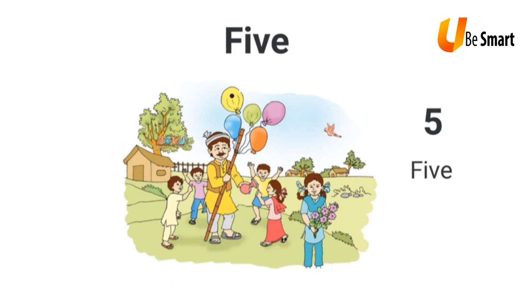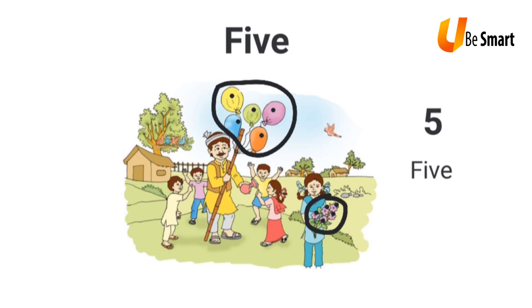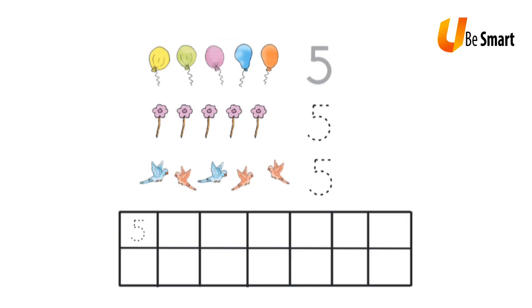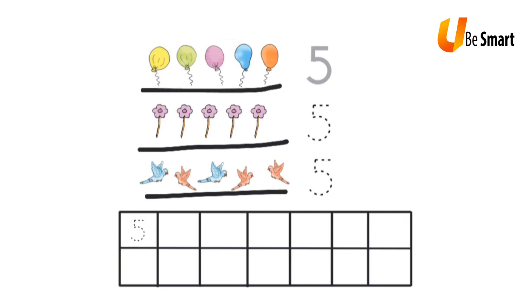In this picture, I see one, two, three, four, and five balloons. And I see one, two, three, four, and five flowers. I also see one, two, three, four, and five birds. So I see five balloons, five flowers, and five birds. I write the number 5 along these dotted lines like this, and I also write them in each of the boxes below.